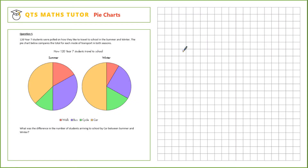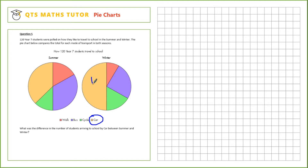Question 5. 120 Year 7 students were polled on how they liked to travel to school in the summer and winter. The pie chart below compares the total for each mode of transport in both seasons. What was the difference in the number of students arriving to school by car between summer and winter? The students arriving by car is the yellow segment. In winter, we can clearly see that's one half.